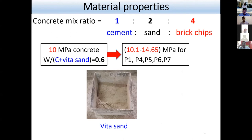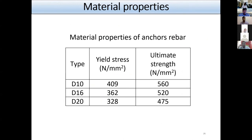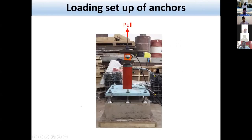The concrete strength varied from 10.1 to 14.65 MPa. Rebar diameters of 10, 16, and 20 mm were used for this test. The loading setup was exactly the same as the scale test performed in Japan.